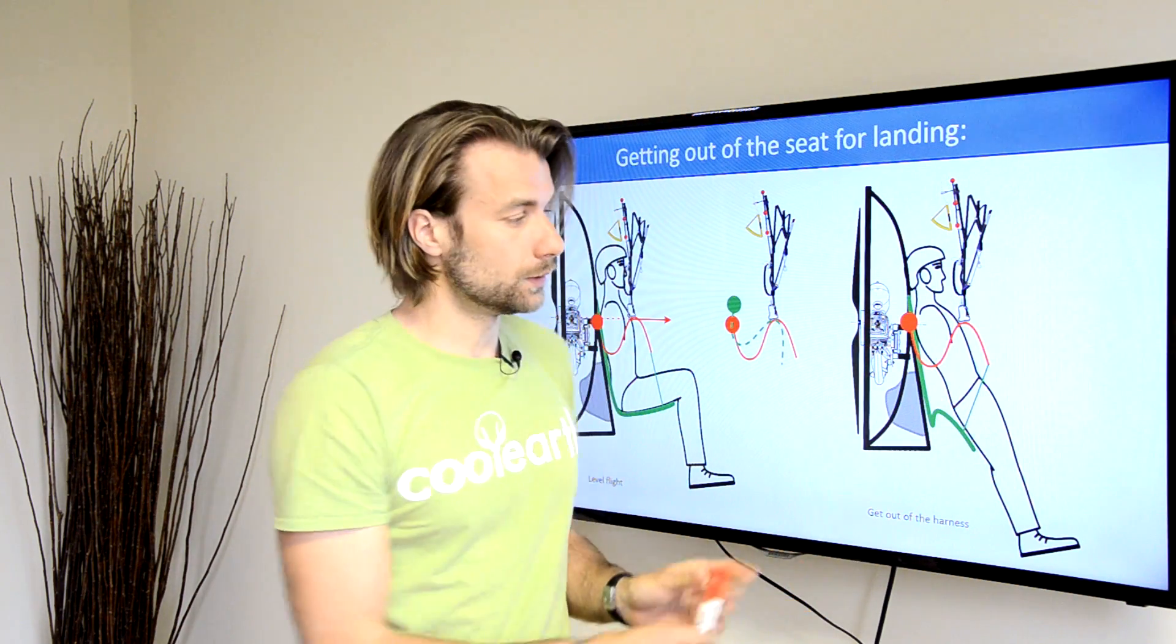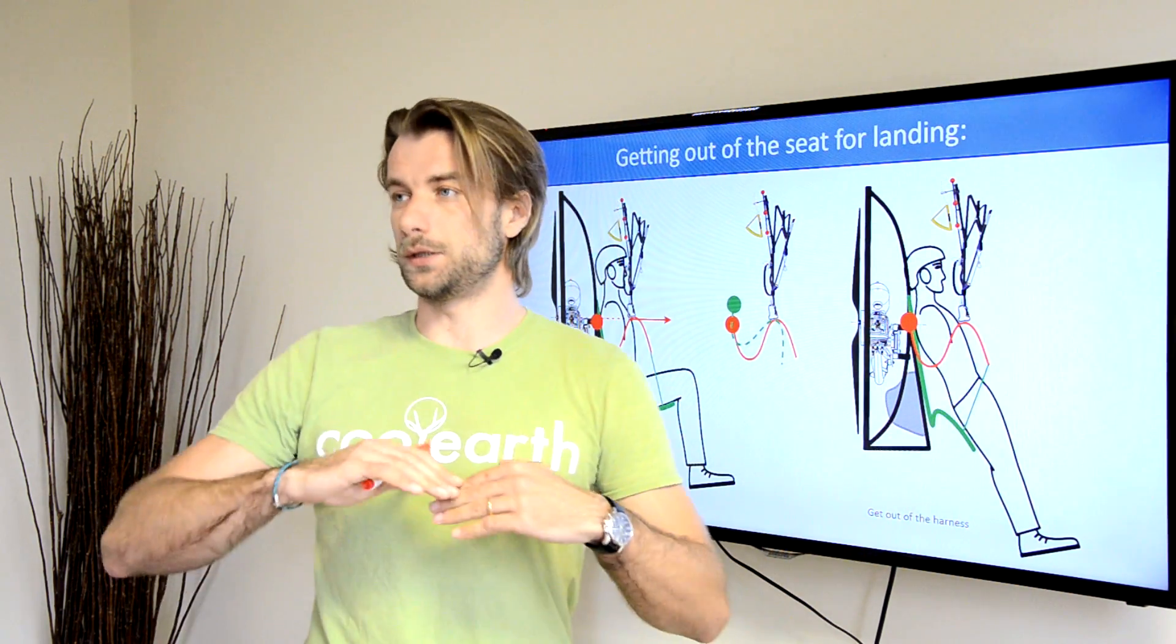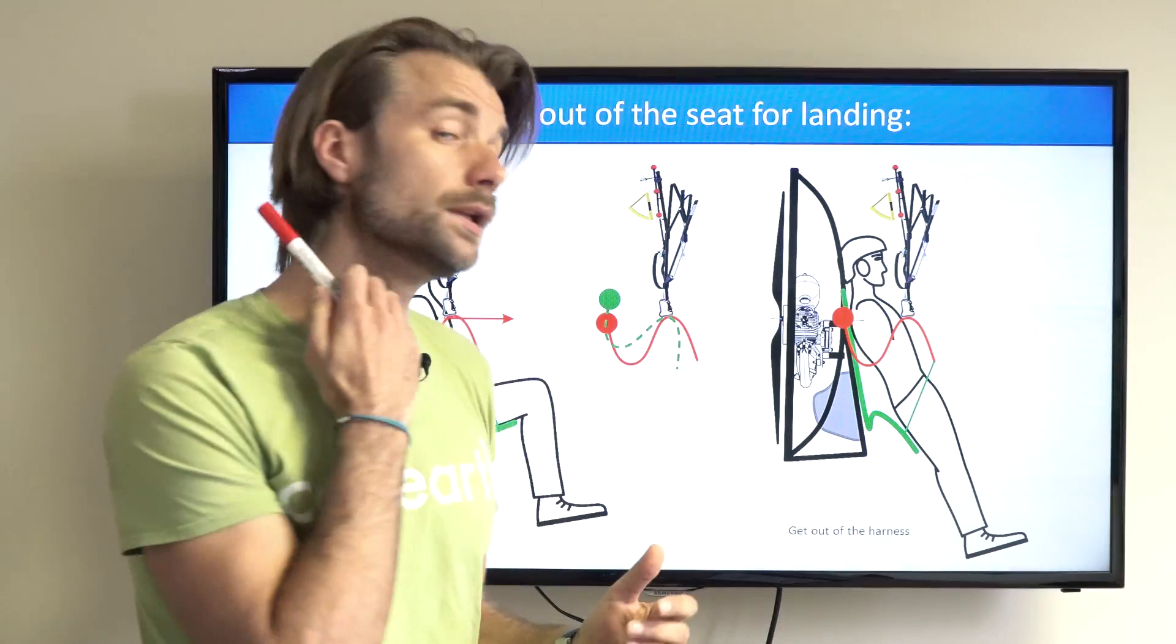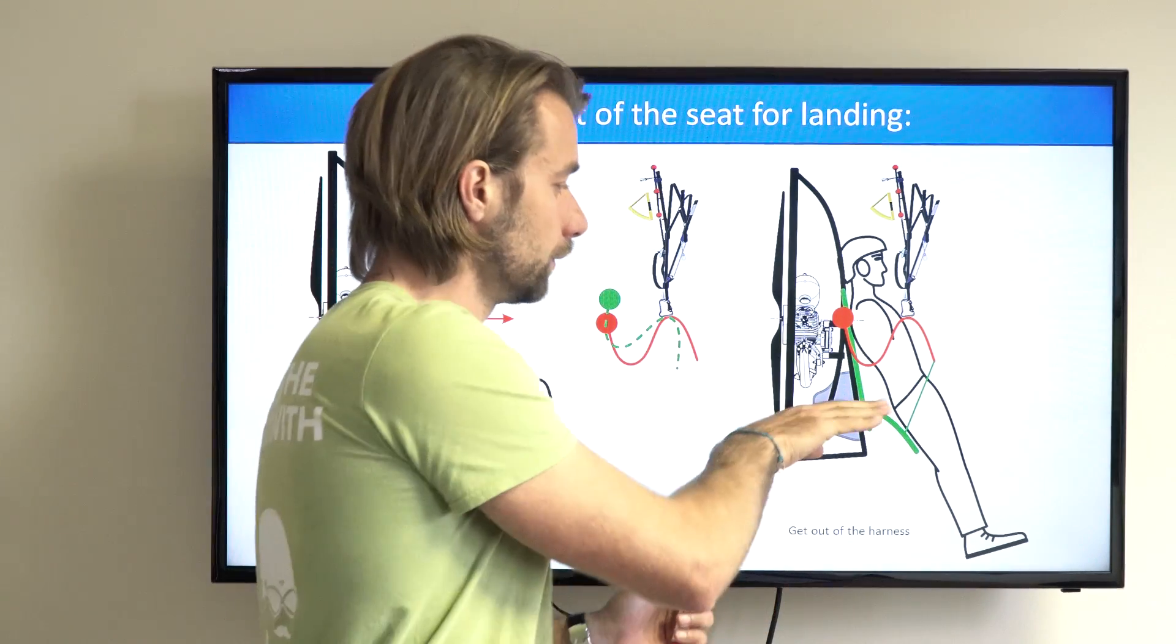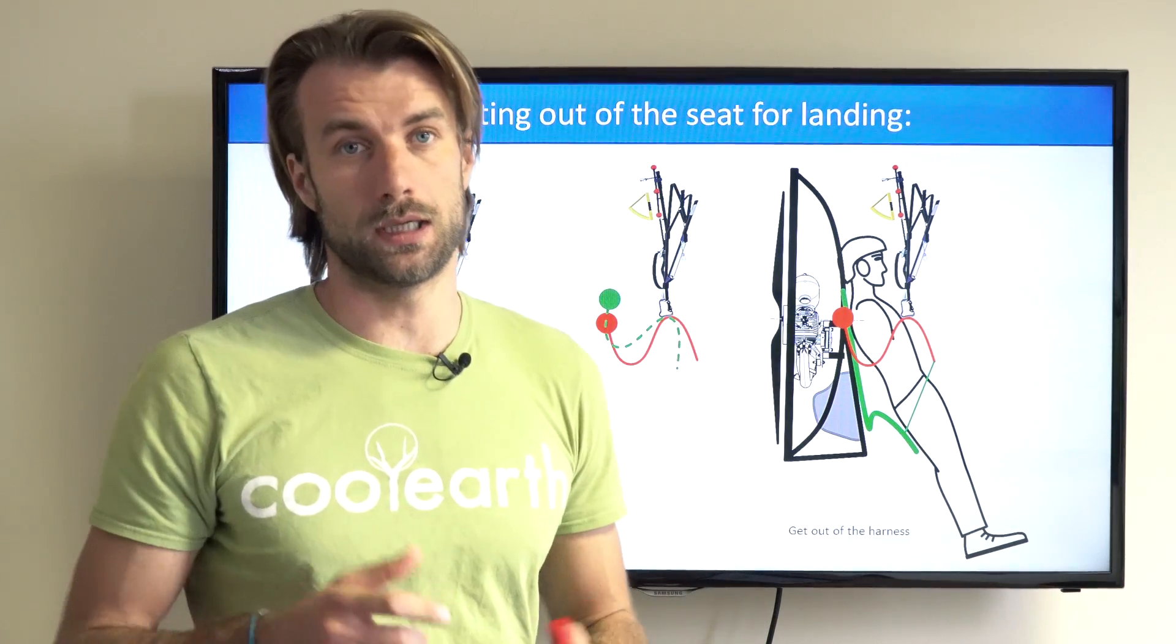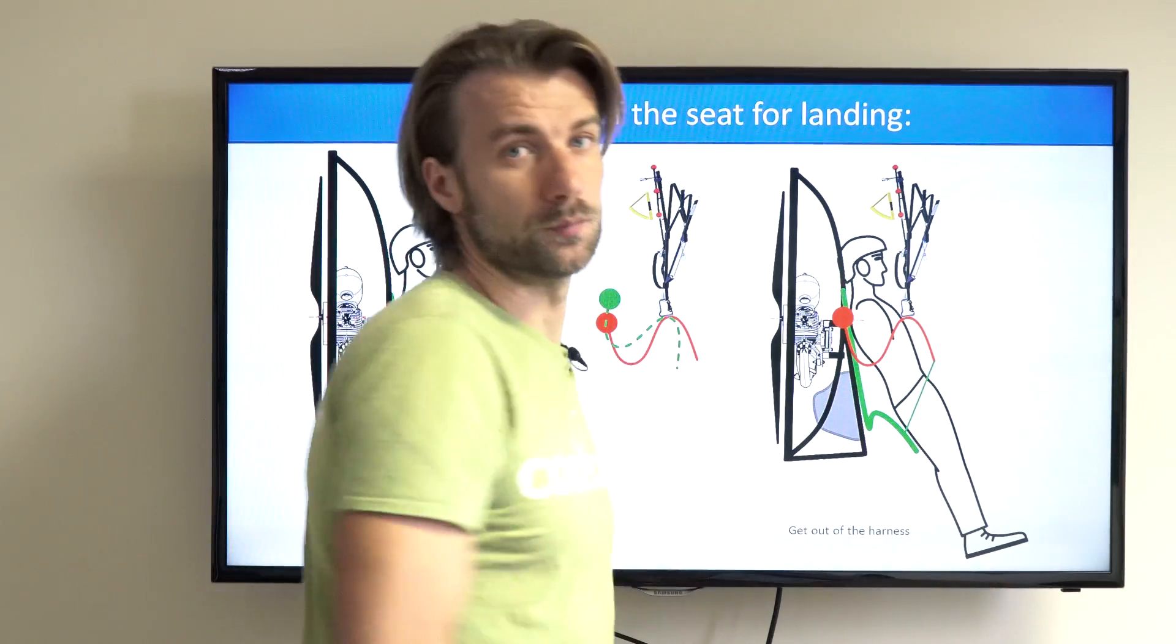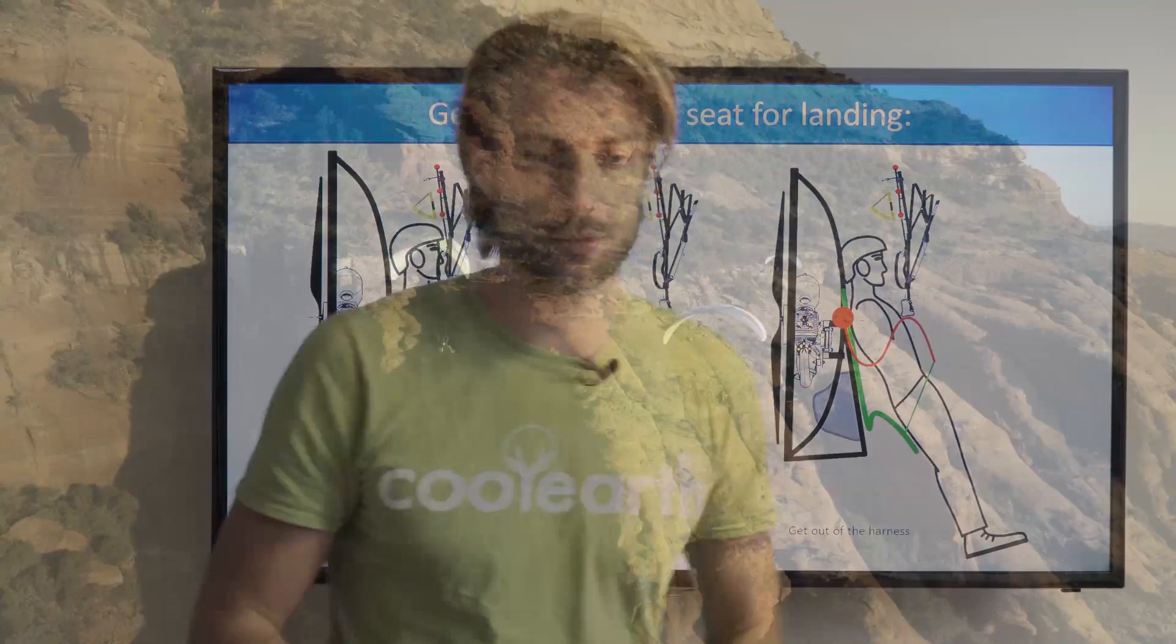The more backwards you have the seat board, the easier is to tilt the seat board for landing. In fact, having it way in the back would actually be possible to lock the seat board again behind your butt, just like we had it on takeoff. That would prevent this reclined position and you will end up landing in a more upright position.